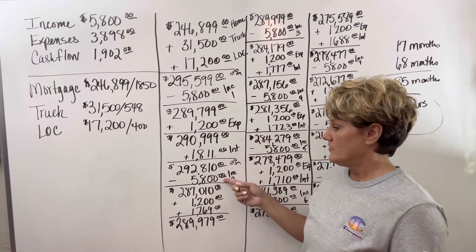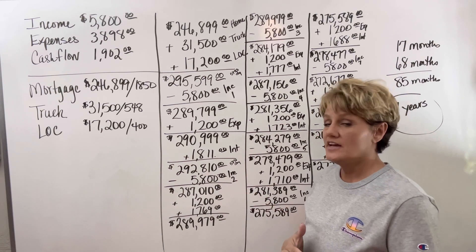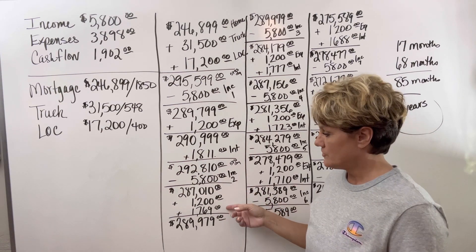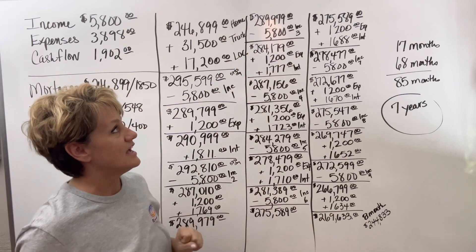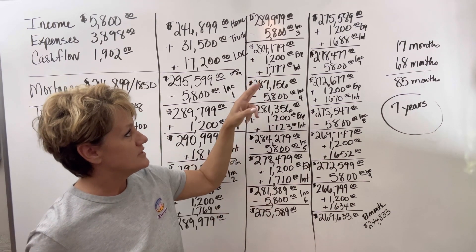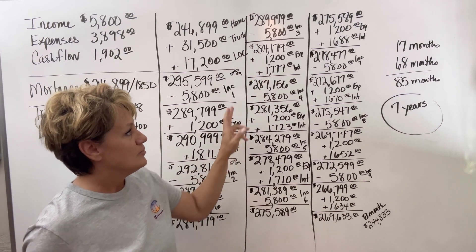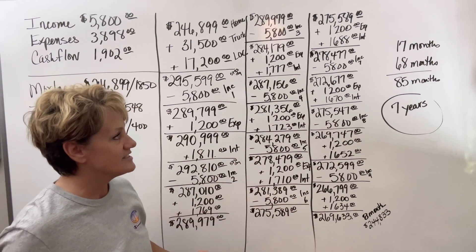So the income in month two will go in, knocking the balance straight down to $287,010. The interest and the expenses will come back out, bringing the balance to $289,979. Income will go in in month three, the expenses and the interest will come out. Month four, same thing. Month five, same thing. Month six, same thing.